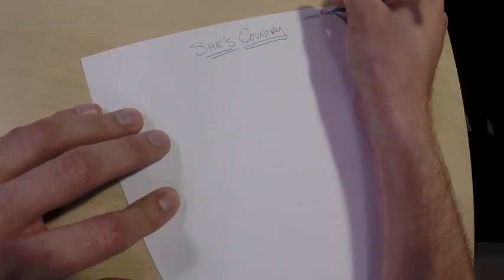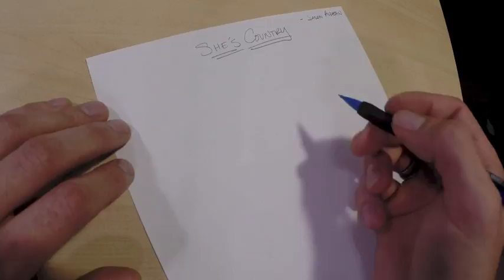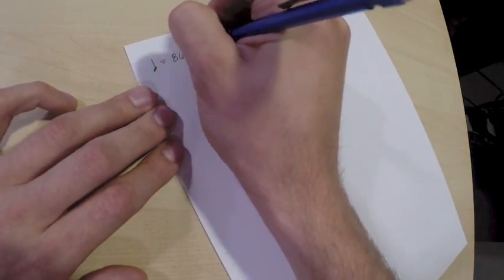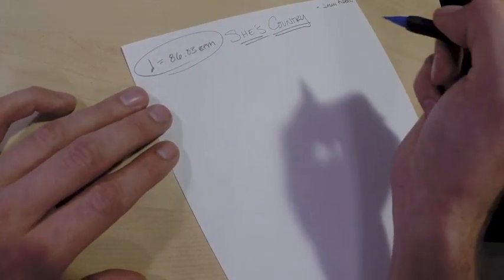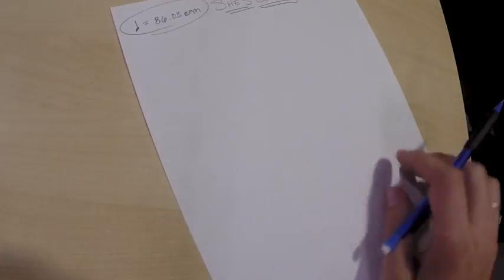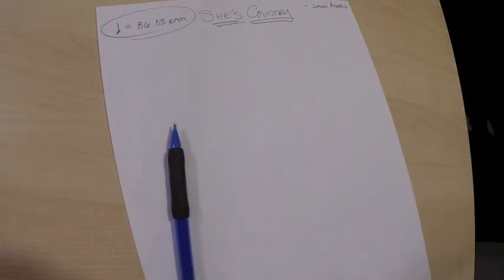So we're going to be doing She's Country by Jason Aldean, title at the top, artist at the top right. Notice I'm using pencil because I do make a lot of mistakes and erase a bunch. Tempo goes in the top left and I'll show you how I got that in a second.